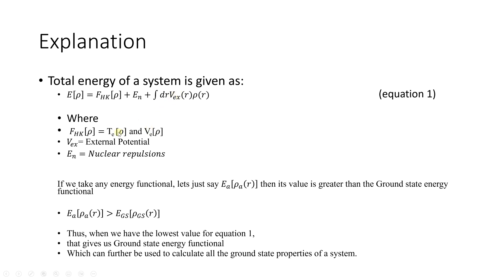V_ext represents the external potential, which, as discussed in the previous video, represents the nuclei. E_N here represents the nuclear repulsion — that is, the repulsion between different nuclei.